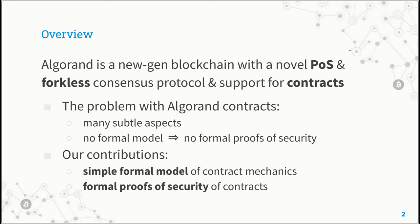In the absence of a precise understanding of the behavior of Algorand — that is, in the absence of a formal model — it is impossible to prove that a smart contract is secure. Our main contribution is a simple formal model of the mechanics of smart contracts in Algorand. By exploiting this model, we have been able to formalize a series of relevant smart contracts and to formally prove their security.